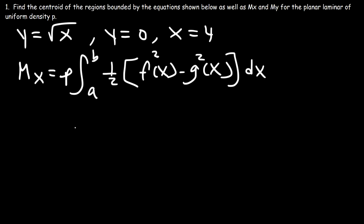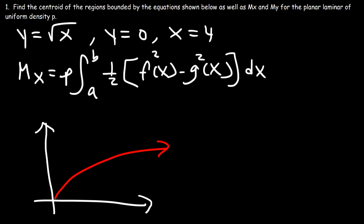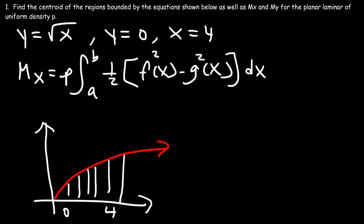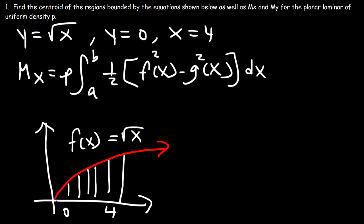Now what we need to do is draw a graph first. This is the graph of y equals the square root of x, bounded by the line y equals 0 and the line x equals 4. This is the region of interest — we need to find the center of mass somewhere in that region. So f(x) is the top part of the region, which is the square root of x, and g(x) is the bottom part, y equals 0.